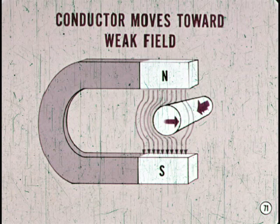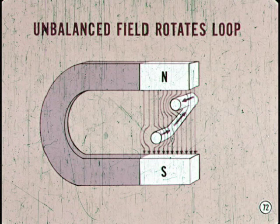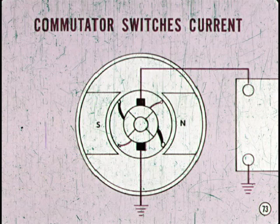But what about rotation? To get rotating motion, the conductor is formed into a loop. Current flow through the loop causes an unbalanced field condition at both poles. Now the unbalanced field condition rotates the entire loop. By adding another loop, two brushes, and four contact segments, we have a simple armature and commutator. This automatically switches current from one loop to the other every quarter revolution to provide continuous rotation.